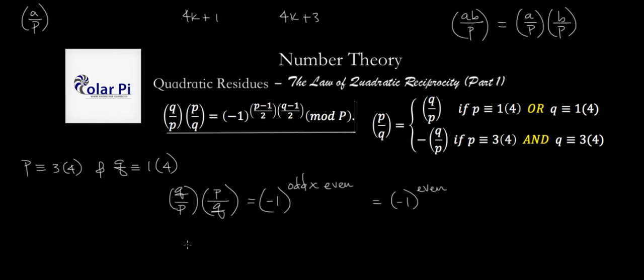And then this here, since q is congruent to 1 mod 4, we'll have to be an even integer. So we'll have odd times even integer as an exponent to negative 1. But that's gonna be negative 1 to the power of an even integer. And so then we have that q over p times p over q is equal to 1, because negative 1 to an even integer is gonna be 1. And now, what we can do is multiply both sides of this very last equation by q over p.